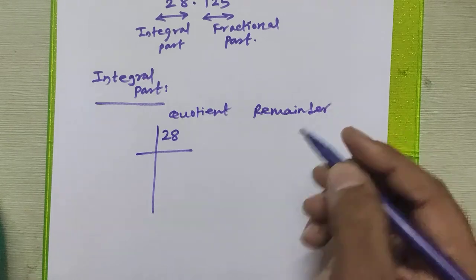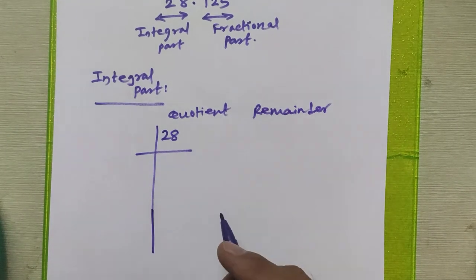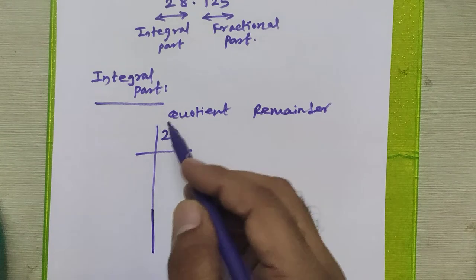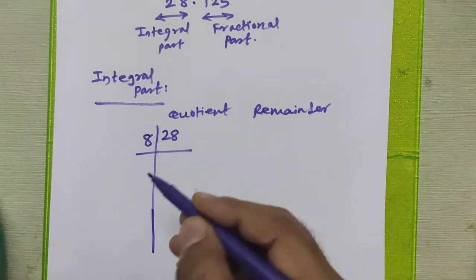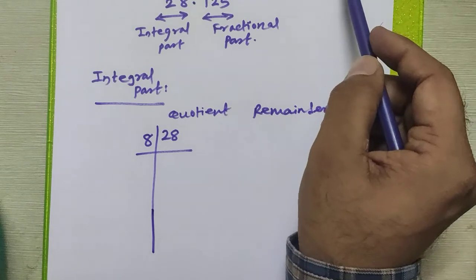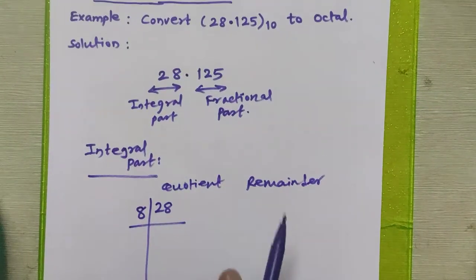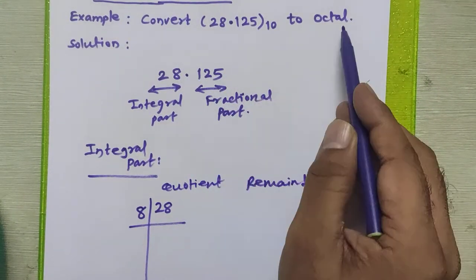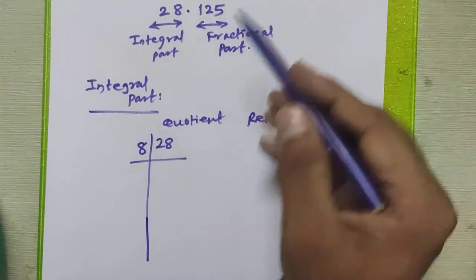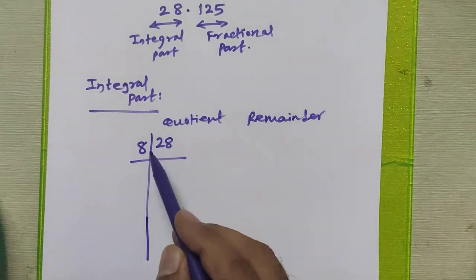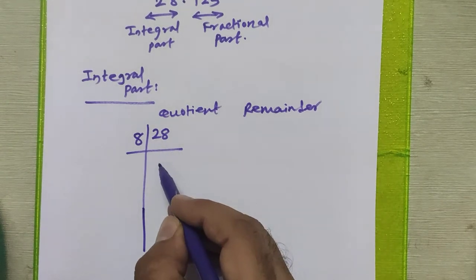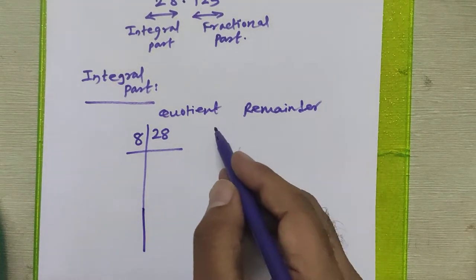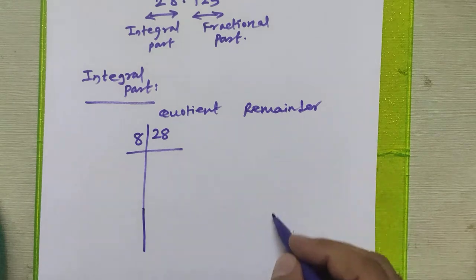We are going to divide this decimal number by eight successively because we want to convert it into octal. So whenever you want to convert any decimal number to octal, you have to divide the given decimal number by eight successively. The quotient will be written in this line whereas the remainders of each and every step will be written into the remainder column.